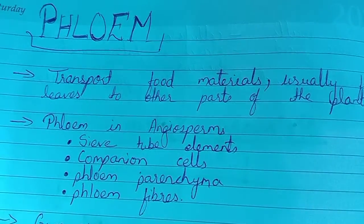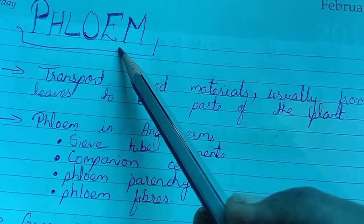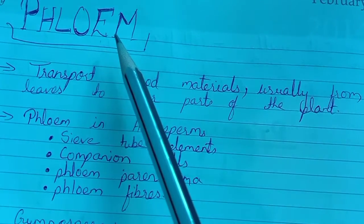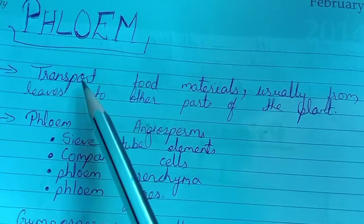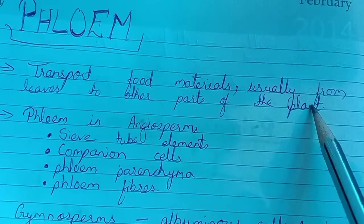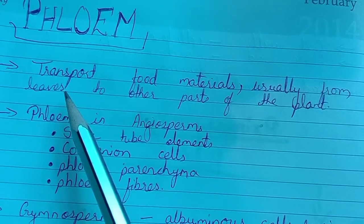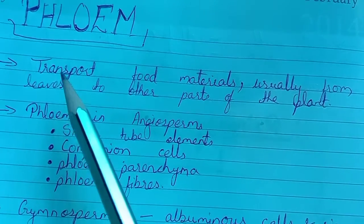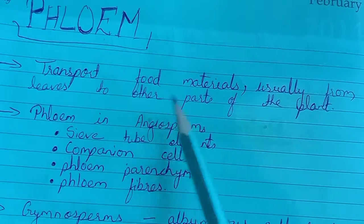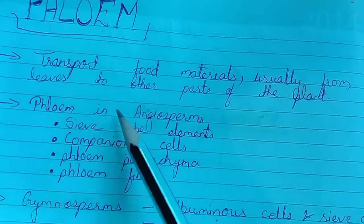In the last class we dealt about xylem. In this class we'll deal with the food pipe, that is phloem. Phloem is nothing but the pipeline which carries food. It transports food materials usually from the leaves to other parts of the plant. In leaves, photosynthesis is going on, and even in green stems. Food material is passed to different parts of the plant because of the phloem.